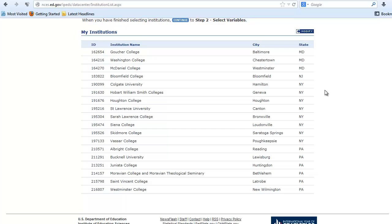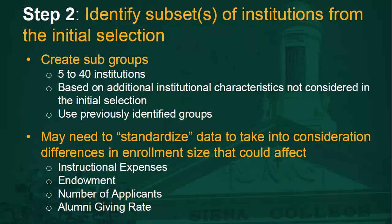A list of institutions will be generated. You can then go to Step 2 at the top of the list to select variables to make subsets, but we will not do that here. Now we will move on to our own Step 2: identifying subsets of institutions from the initial selection. In the Easy Group list, the initial variables selected were Geographic Region, Highest Degree Offered, and Carnegie Classification. Choose data elements specific to the base school for which you want peers. Use these standardized data elements to create a workable peer list of 5–40 institutions. Standard data elements would include enrollment size, instructional expenses, and number of applicants. You may need to standardize data to account for differences in enrollment size that could affect instructional expenses, endowment, number of applicants, and alumni giving rate.